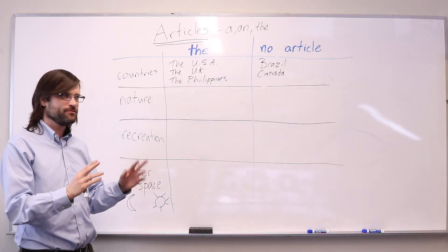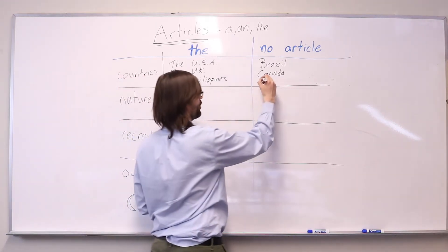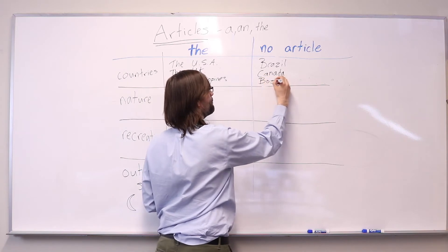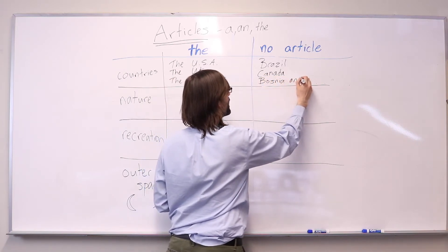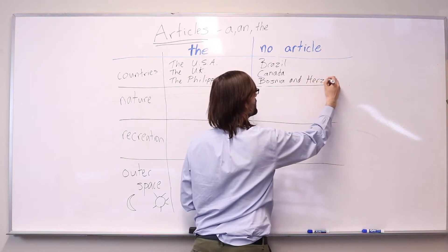If a nation is comprised of two countries, we don't use an article. For example, Bosnia and Herzegovina.